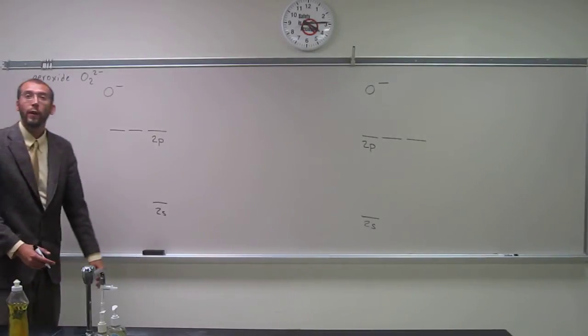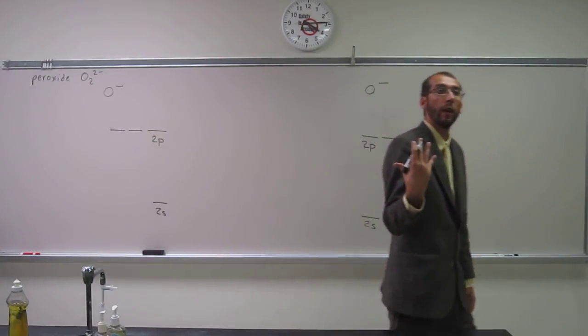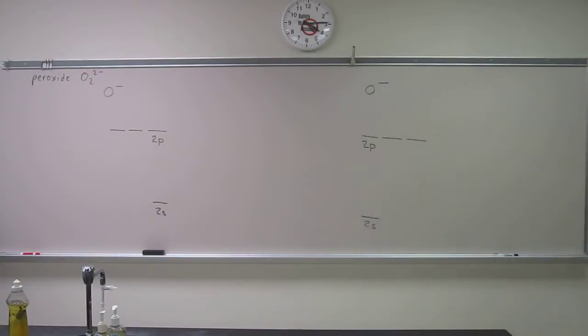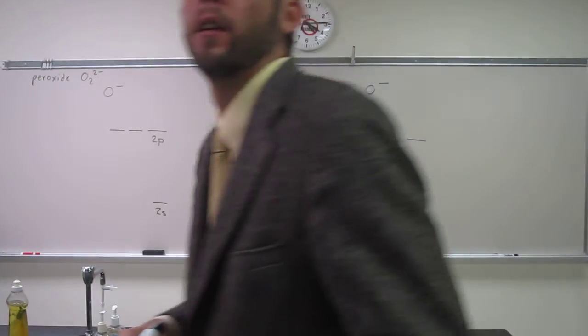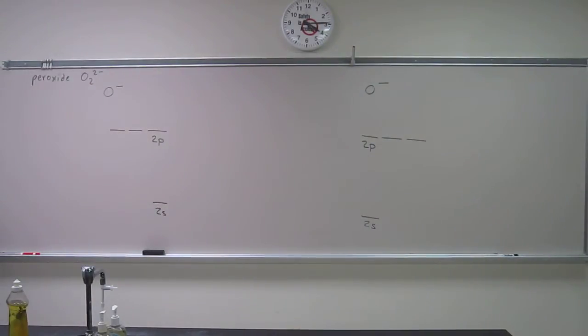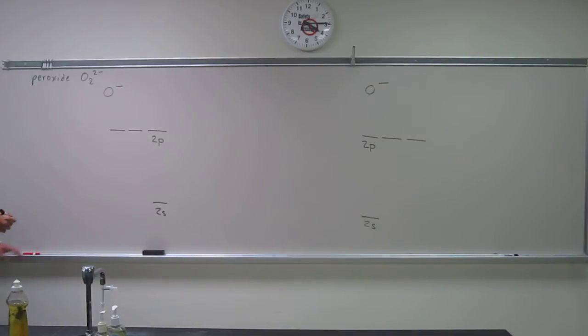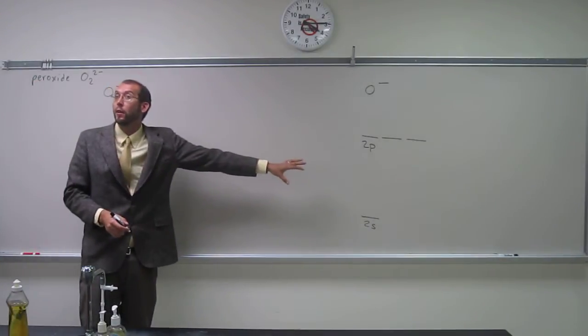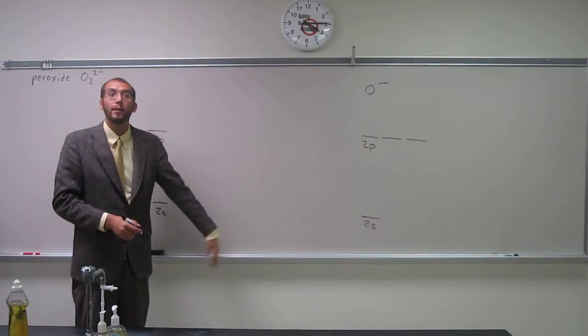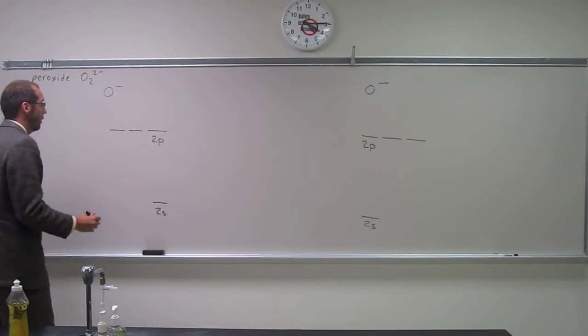So now what do I need to do? I need to put electrons in my orbitals. How many electrons would O minus have to put in those orbitals? It'd be six plus one, so seven. Where do I get that one from? Because it's O minus. So there's going to be seven on this one and seven on that one.